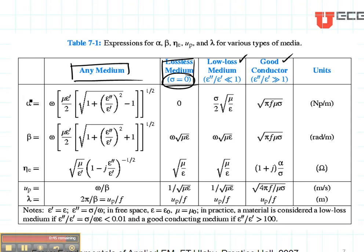So this is how you find the attenuation constant alpha given in nepers per meter, the propagation constant beta given in radians per meter, the characteristic impedance eta, which is given in ohms, the velocity of propagation and the wavelength.